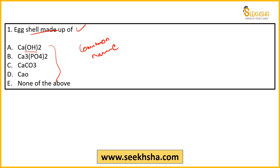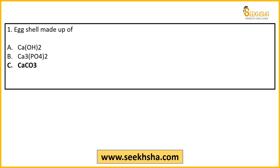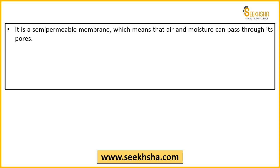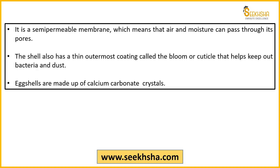This question tests two things — you may know the common name but not the chemical formula. If you're not a science student, the chemical formula may not be remembered, and if the question comes in this format you can't answer it. So both the common name and chemical formula should be memorized. The correct answer is Option C — CaCO3, which is calcium carbonate. That is what eggshell is made of.